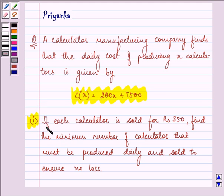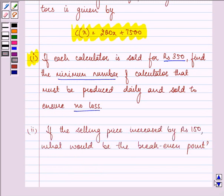Firstly, if each calculator is sold for Rs. 350, find the minimum number of calculators that must be produced daily and sold to ensure no loss. Secondly, if the selling price increased by Rs. 150, what would be the break-even point?